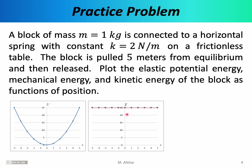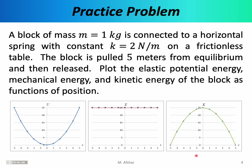The kinetic energy graph is 25 minus x squared, which is an inverted parabola. You can verify this by plugging in a few values, or simply recognize that the minus sign inverts the parabola and adding 25 shifts it upward by 25 units.